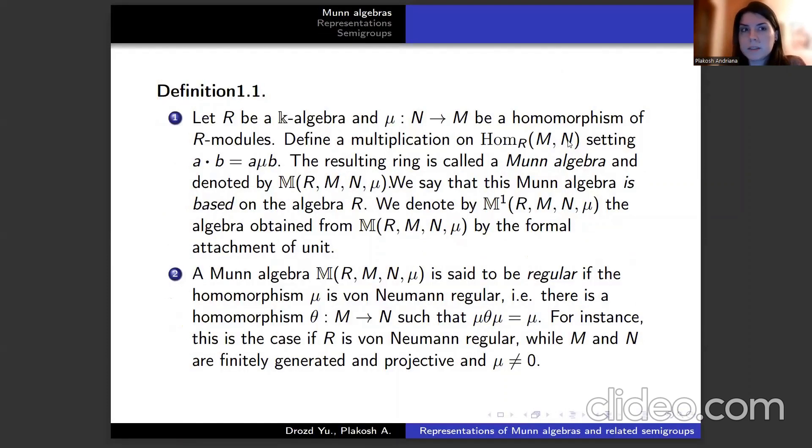Let R be a k-algebra and μ be a homomorphism of R-modules. Define a multiplication on Hom setting a·b equals a∘μ∘b. The resulting ring is called a Munn algebra and denoted by M. We say that this Munn algebra is based on the algebra R.